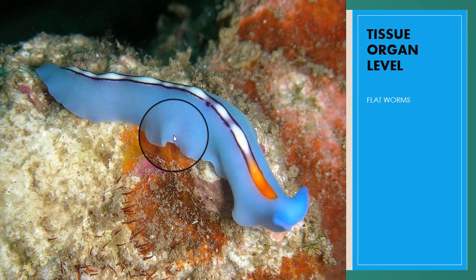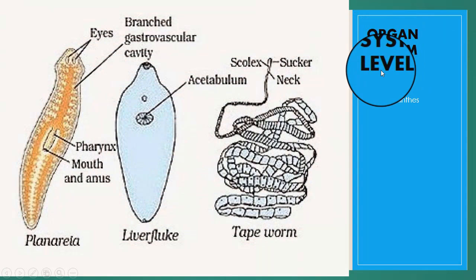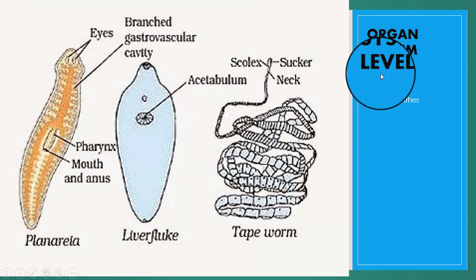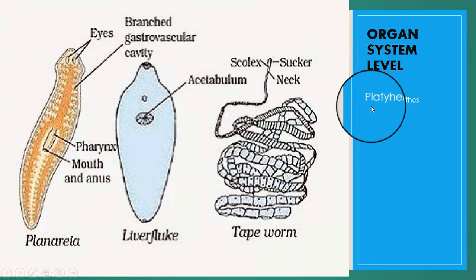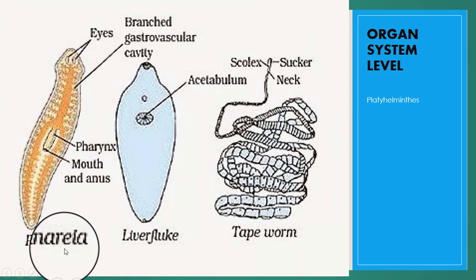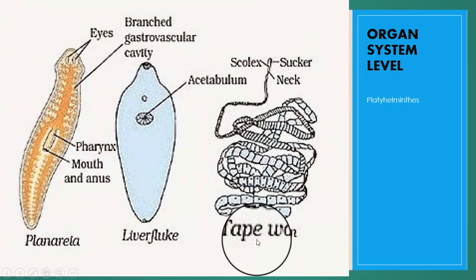The fifth and highest level is organ system level organization. When organs work together to perform some functions, we have the organ system level. The systems are associated with specific body functions such as digestion, respiration, circulation, excretion, and reproduction. The simplest animals showing this type of organization are Platyhelminthes — including planaria, liver fluke, and tapeworm — which have organ system level of organization.